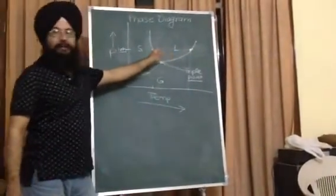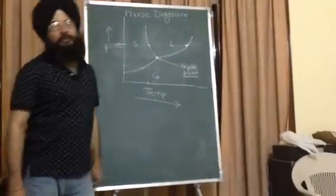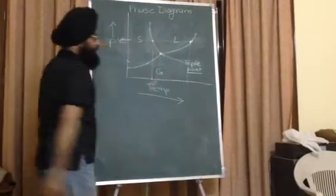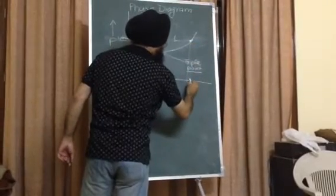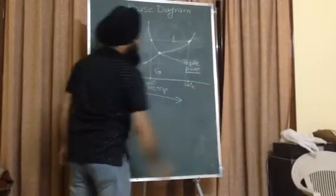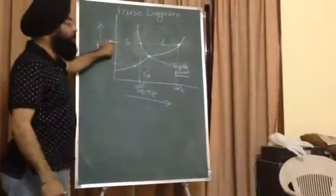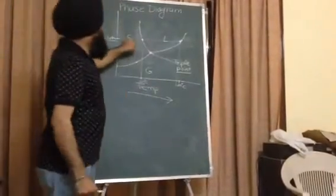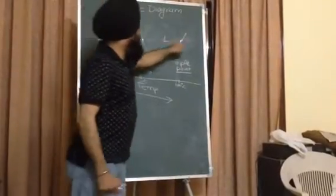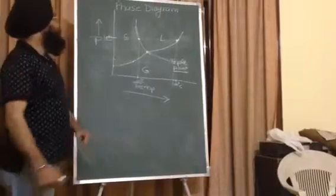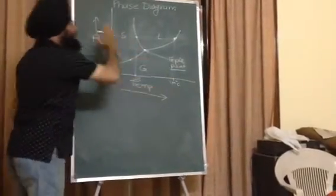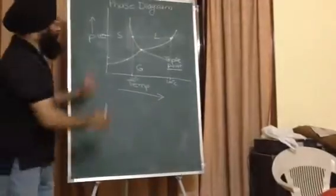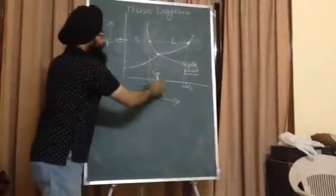Solid to liquid is known as melting, and liquid to gas is known as vaporization. This temperature represents the normal melting point, which is 0 degrees centigrade, and this temperature represents the normal boiling point, which is 100 degrees centigrade. So at atmospheric pressure, ice melts at 0 degrees centigrade and water boils at 100 degrees centigrade. By studying this phase diagram thoroughly, we can determine the different phases and their behaviors at different combinations of pressure and temperature.